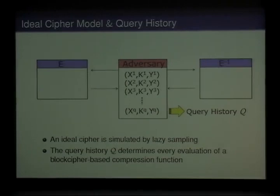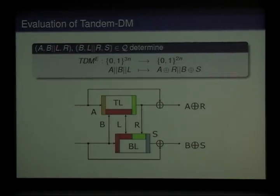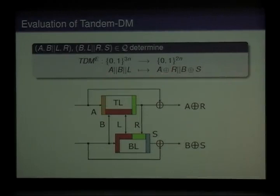How does this query history determine a valid evaluation of a TandemDM compression function? If we have two queries of this form, where B, L, and R have been shifted left-wise, then the first query can be placed at the top position and the second query can be placed at the bottom position, forming a valid evaluation of TandemDM that maps A, B, and L to A plus R concatenated with B plus S.